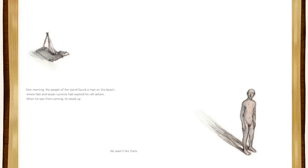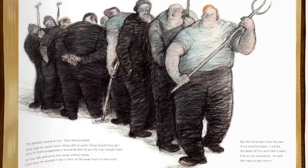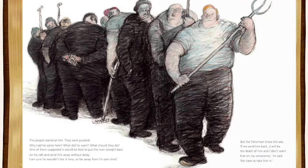When he saw them coming, he stood up. He wasn't like them. The people stared at him. They were puzzled. Why had he come here? What did he want? What should they do? One of them suggested it would be best to put the man straight back on his raft and send him away without delay. 'I am sure he wouldn't like it here, so far away from his own kind.' But the fisherman knew the sea. 'If we send him back, it will be the death of him, and I don't want that on my conscience,' he said. 'We have to take him in.'